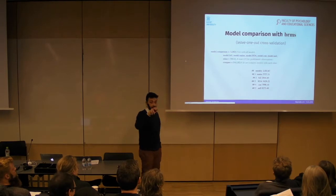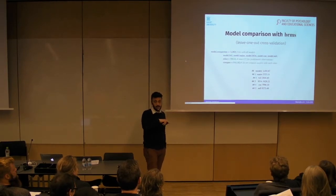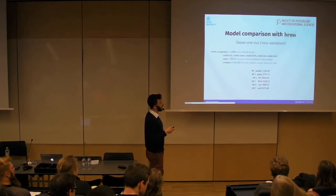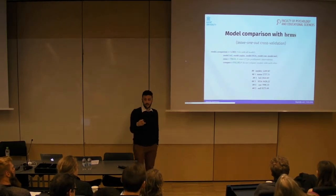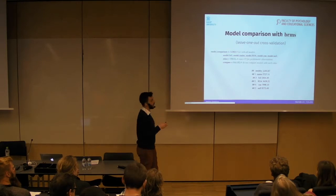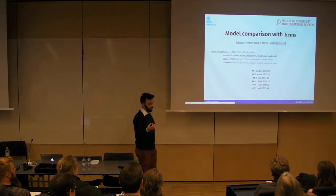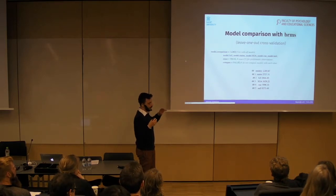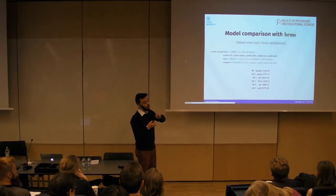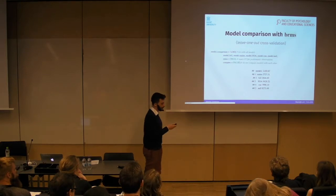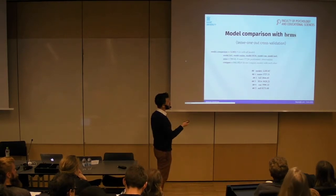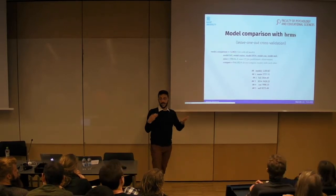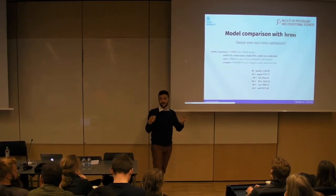We fitted all the models I talked about earlier and then compared them using leave-one-out cross-validation. The idea is to take out observations, run the model on the remaining observations, and assess predictive validity on the unobserved values. We find that the model with the main effects of SOA and cue — but no interaction — is the one with the best predictive validity.